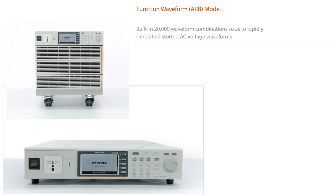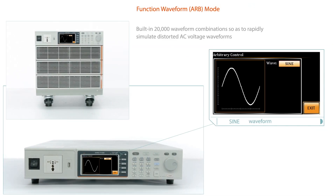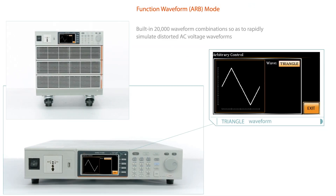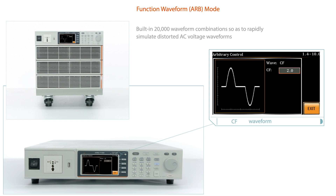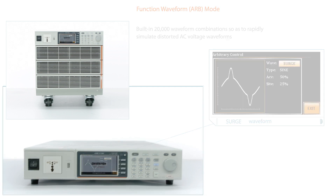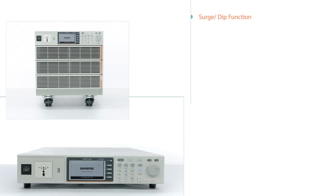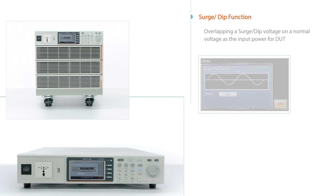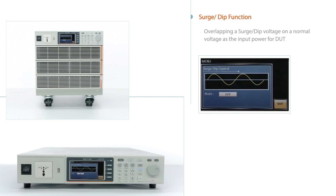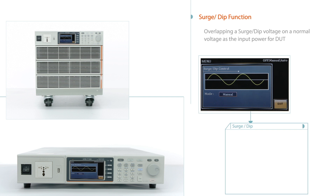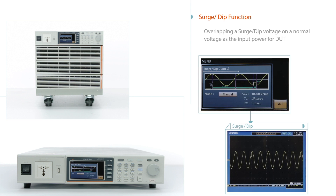Built-in 20,000 waveform combinations allow users to rapidly simulate distorted AC voltage waveforms. Overlapping a surge or dip voltage on a normal voltage as the input power for DUT allows users to simulate surge and dip situations and evaluate DUT characteristics.